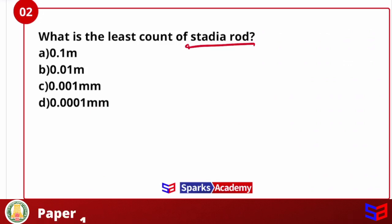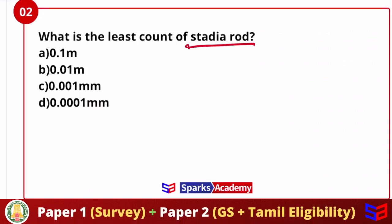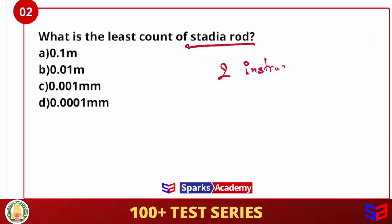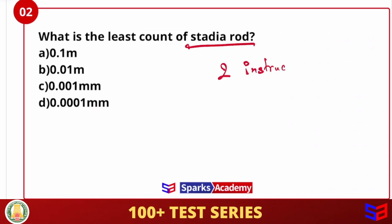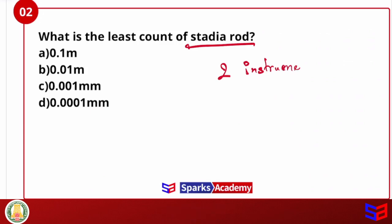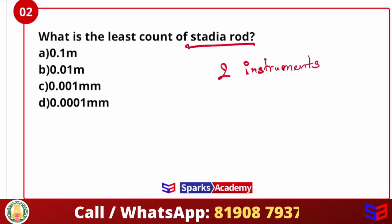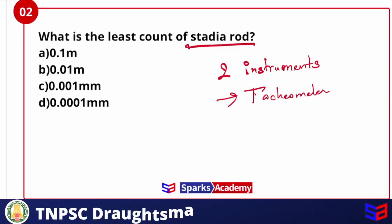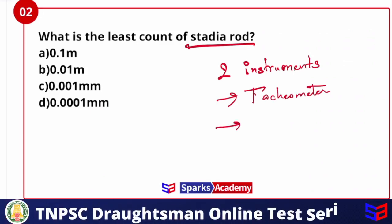When we use tachymetry, we use two instruments. If we use a leveling process, we use levels and leveling staff. Similarly in tachymetry, one instrument is the tachymeter and another one is the stadia rod.